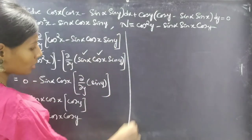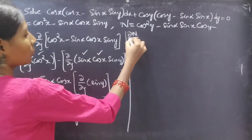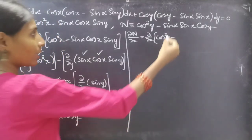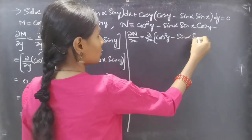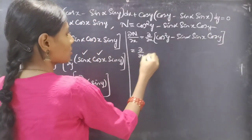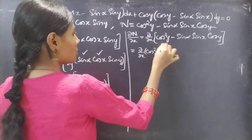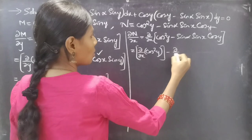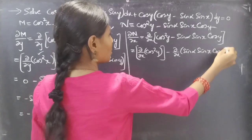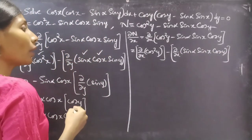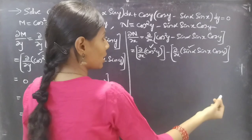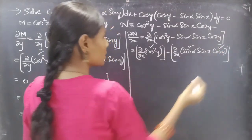Now let's find the partial derivative of N with respect to x. This equals ∂/∂x of cos²(y) - sin(α)sin(x)cos(y). Since we are doing the partial derivative with respect to x, y is treated as constant. In the first term cos²(y) is constant, and in the second term sin(α) and cos(y) are constant.